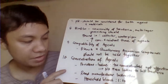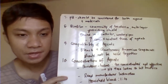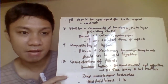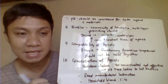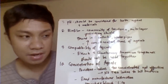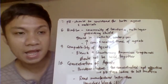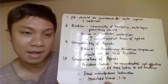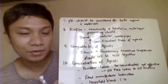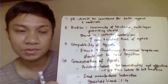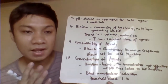Concentration of agents also affects the killing ability. For example, povidone-iodine should not be used at too high a concentration because concentrated povidone-iodine loses its free iodine, which is what actually kills microorganisms. For household bleach, a 1-to-10 dilution is used. Always check the manufacturer's instructions for proper preparation of agents.